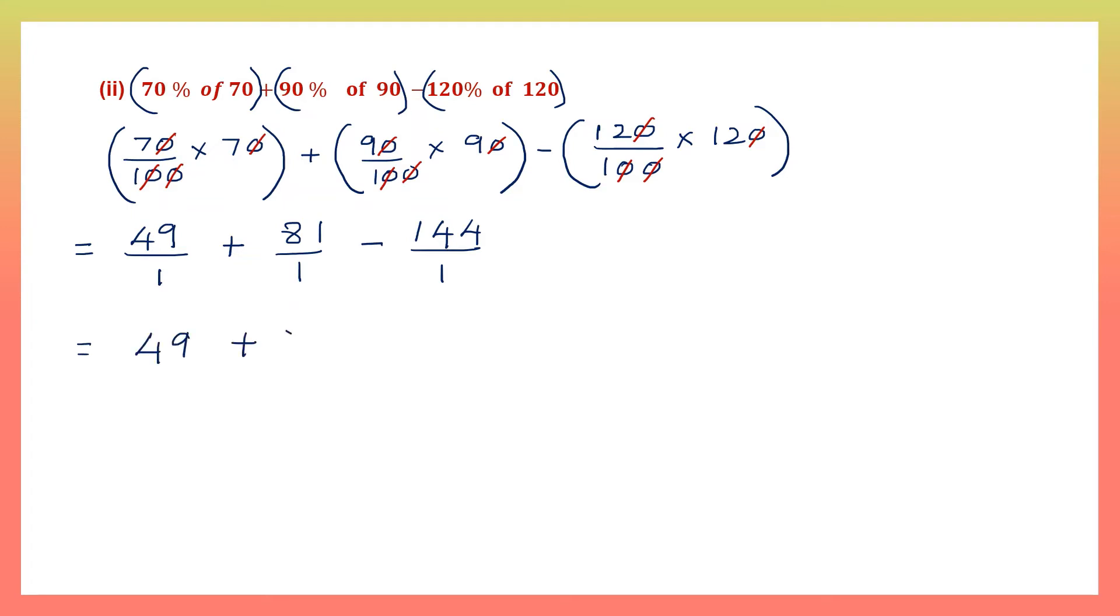First let's add up these two. 49 plus 81 is 130. So we have plus 130 minus 144. When signs are different, we have to put the sign of the bigger number and subtract. So we subtract 144 and 130 to get 14. The answer to this question is minus 14. Final answer minus 14.